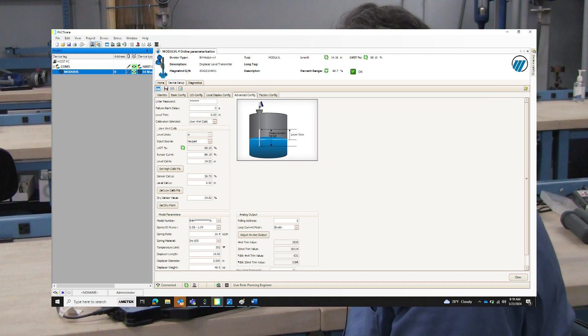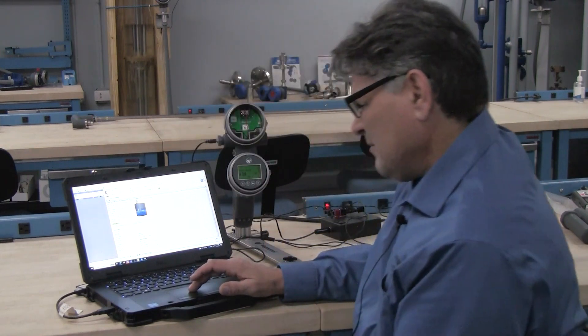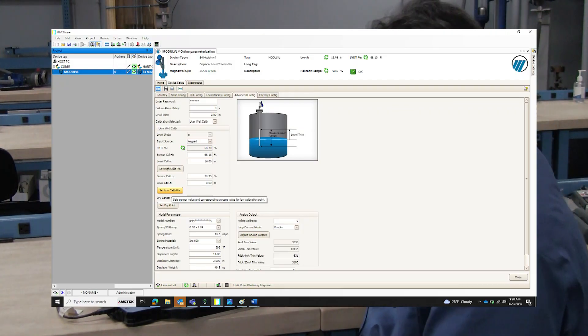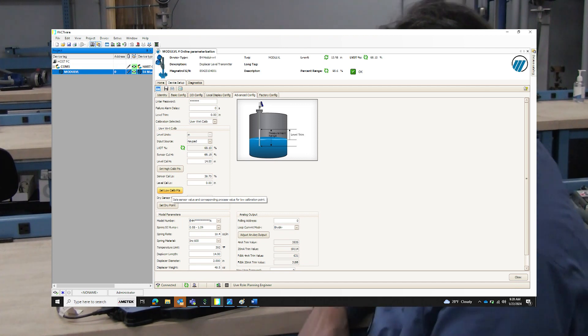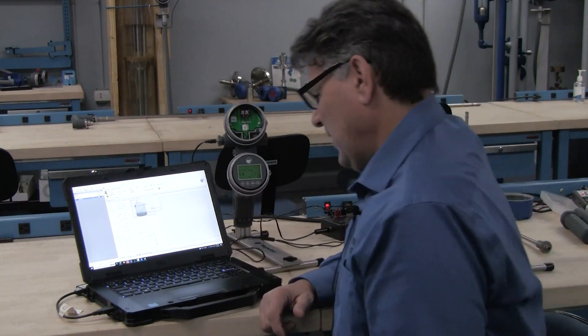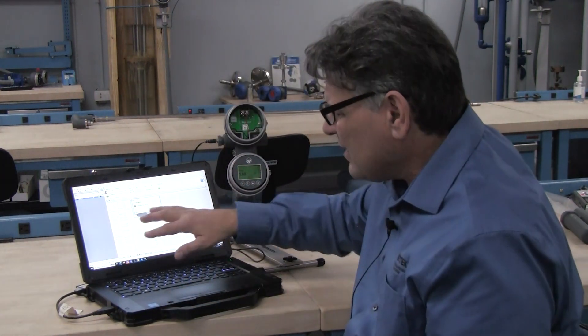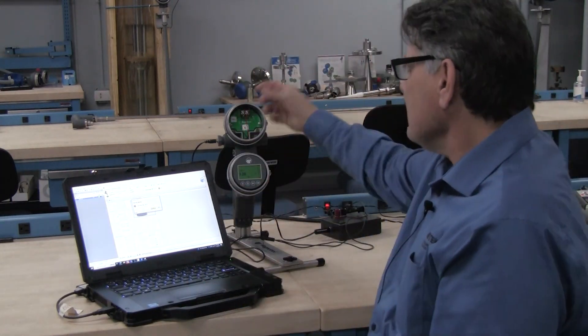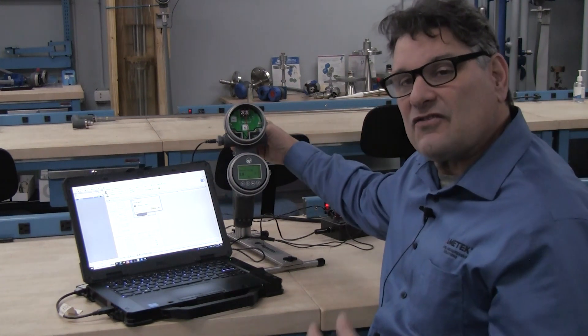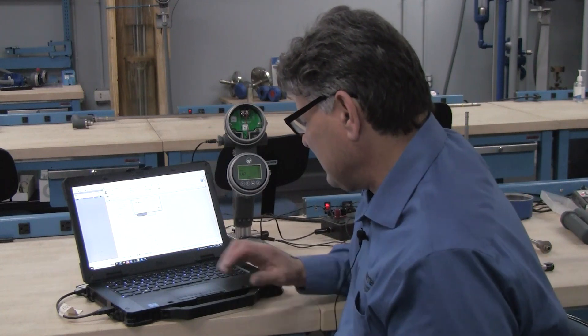So when I enter that, you will see my calibration information come up. And I'm going to go ahead and set my low calibration point since I'm simulating my low level. I simply click this button and it's going to set my low calibration point. And when it does that, what it's looking at, there is a LVDT percentage in these devices. And it goes in and it looks at that and it's going to store the percentage that that LVDT is at.